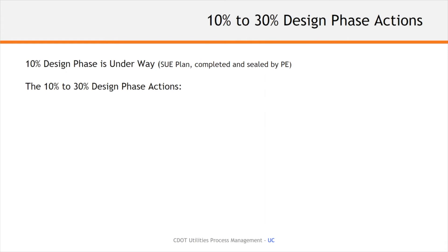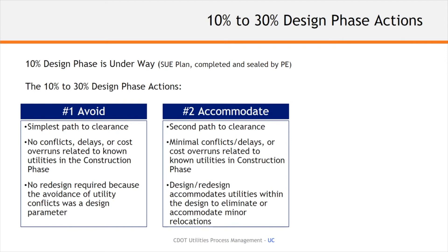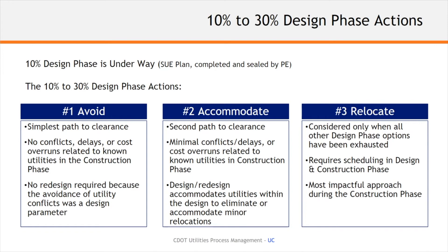From 10% to 30% design, we're looking at the SUE information being delivered and then allowing designers to leverage it to, one, look at avoiding utility relocations altogether if possible; or two, how the utility conflict matrix could show that we could accommodate those utilities — maybe an adjustment in place or a modification to the design to allow that utility to stay in place. That might keep the project out of a long, lengthy utility negotiation and relocation effort. But if it cannot be avoided or accommodated, then relocation will have to commence, and the utility conflict matrix will capture that relocation effort, who's responsible for it, when it's going to happen, and allow better negotiations with the utility companies.